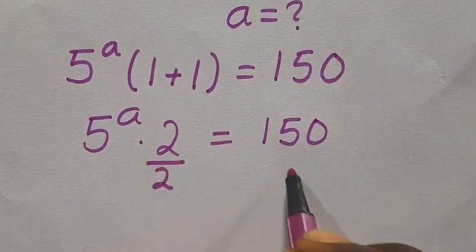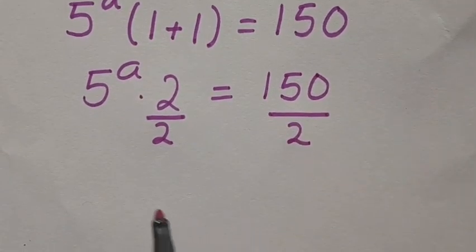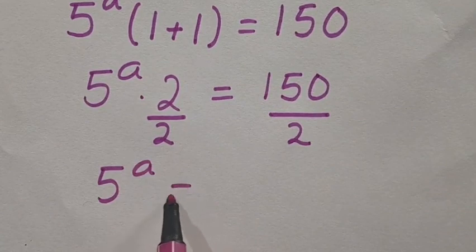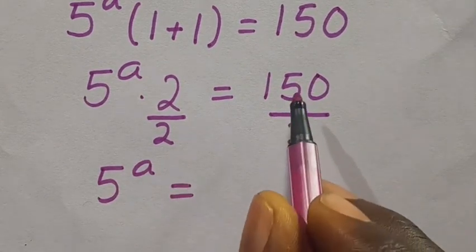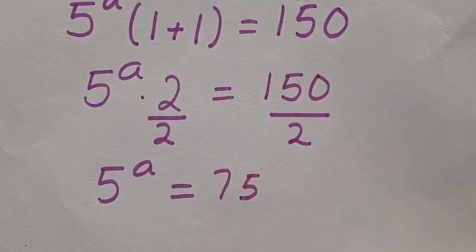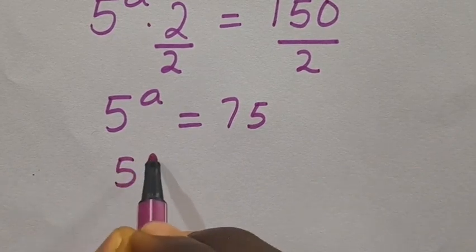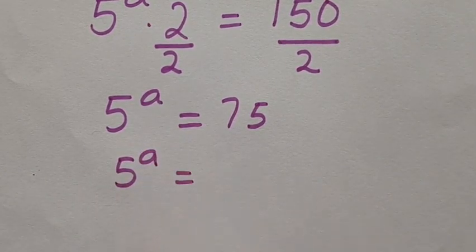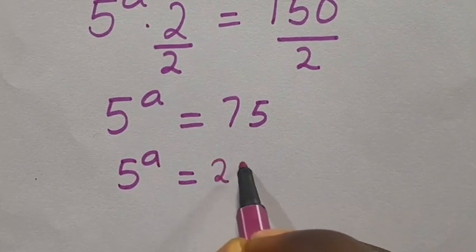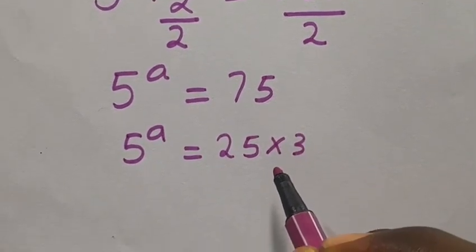Let's divide both sides by 2. So from here we have 5 to the power of a equals 150 divided by 2, which gives us 75. Then from here we have 5 to the power of a equals 25 multiplied by 3.